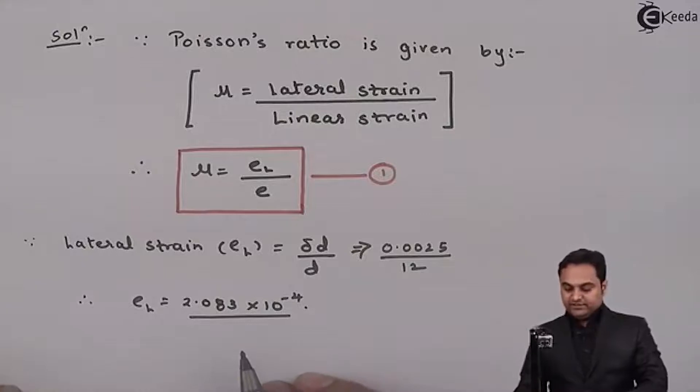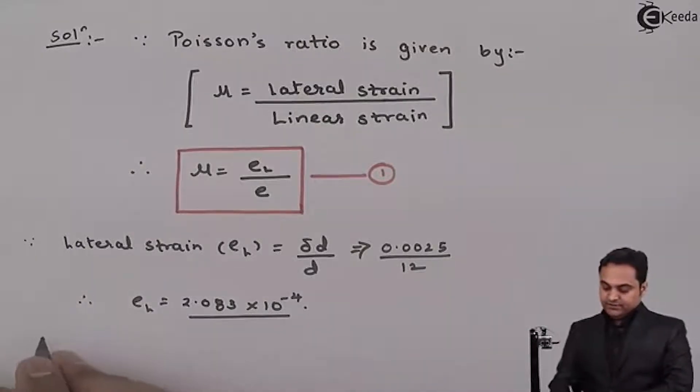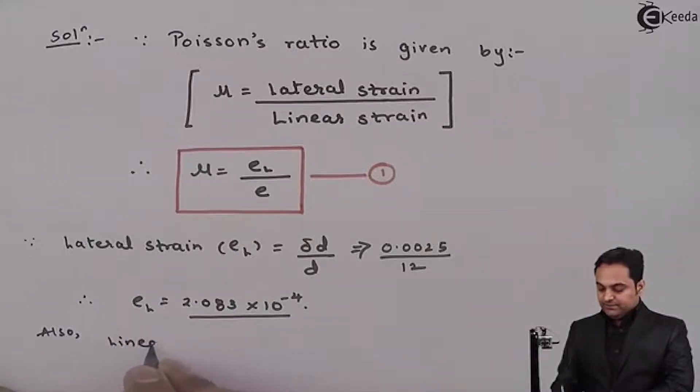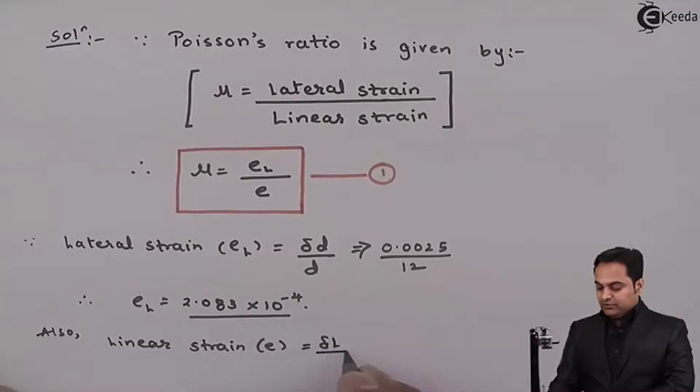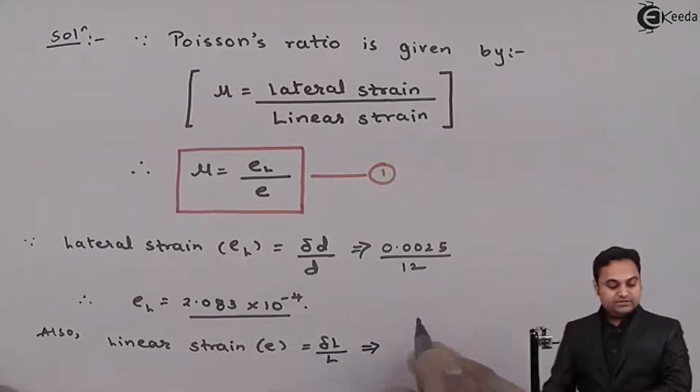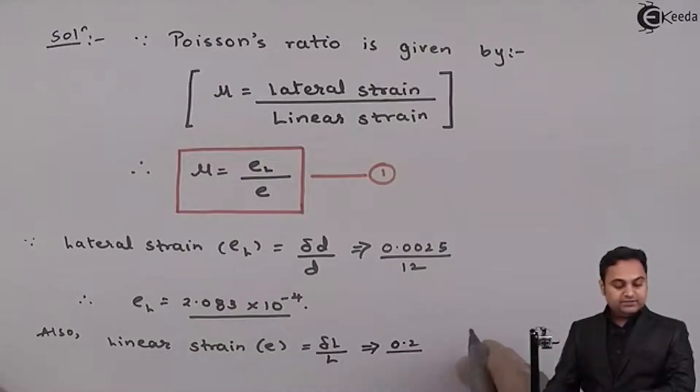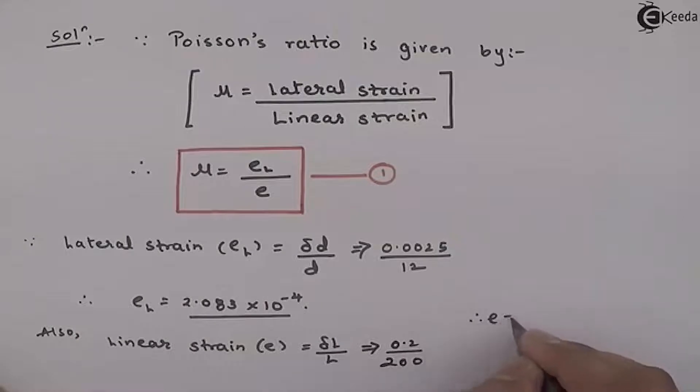Now after getting lateral strain we will calculate linear strain. Linear strain is equal to change in length upon original length. Change in length is given 0.2, original length is 200 mm. So from this linear strain comes out to be 1 into 10 raised to minus 3.